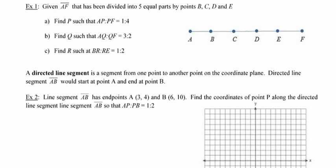They tell us they're giving us this line segment with endpoints A and F. They're also telling us it has already been divided into five equal parts using points B, C, D, and E. In part A, they want us to find point P such that the ratio from A to P to PF is 1 to 4.